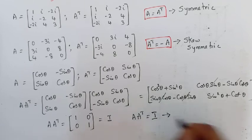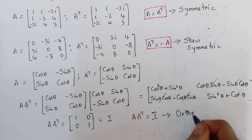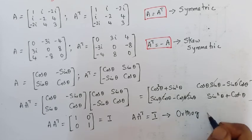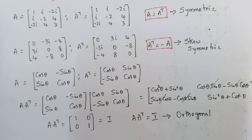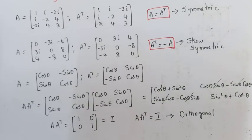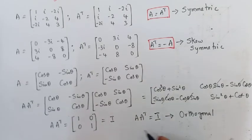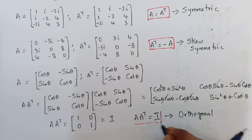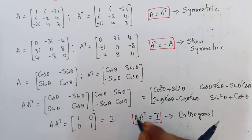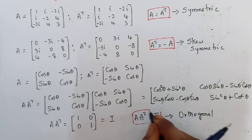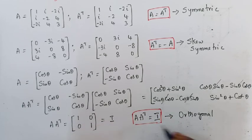Such a matrix is called an orthogonal matrix. The condition for a matrix to be orthogonal is A into A transpose should be equal to I, the identity matrix.